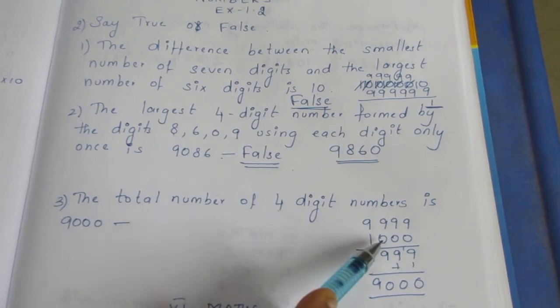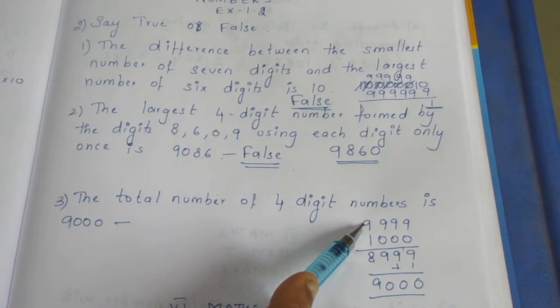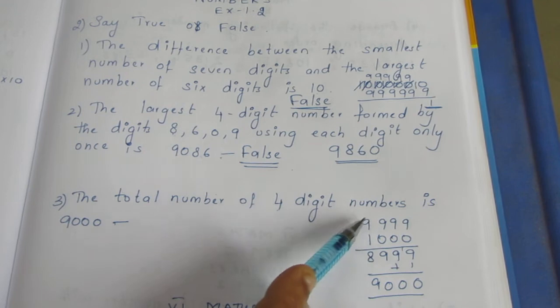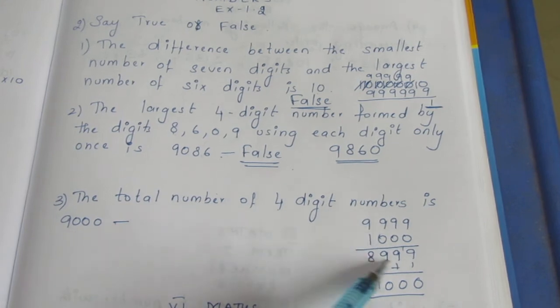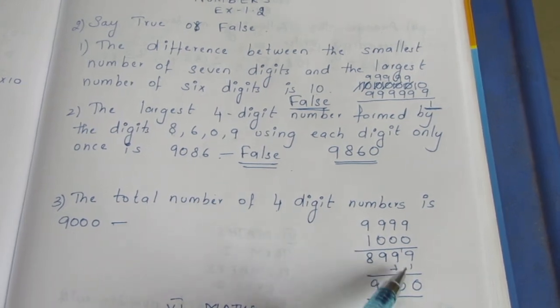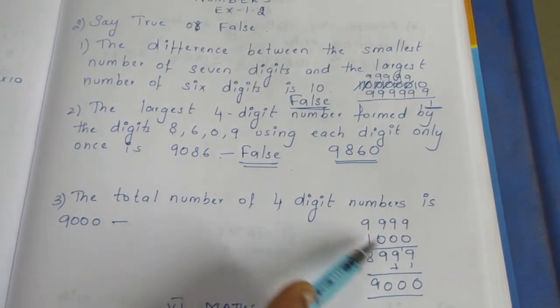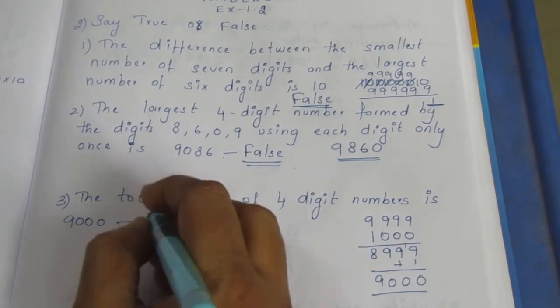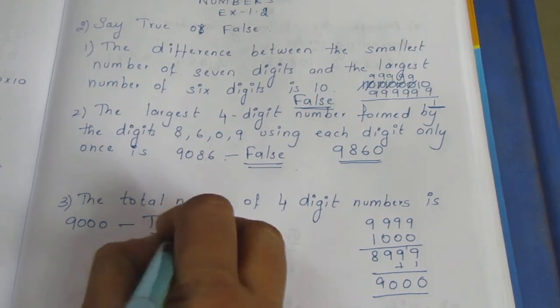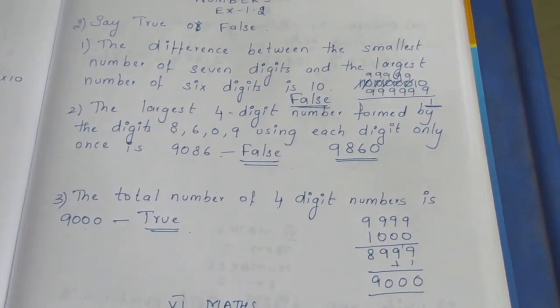1000, then calculating 999. Add 1 to get the total. If you add this number, you get 9000. This is the correct answer, so it's true.